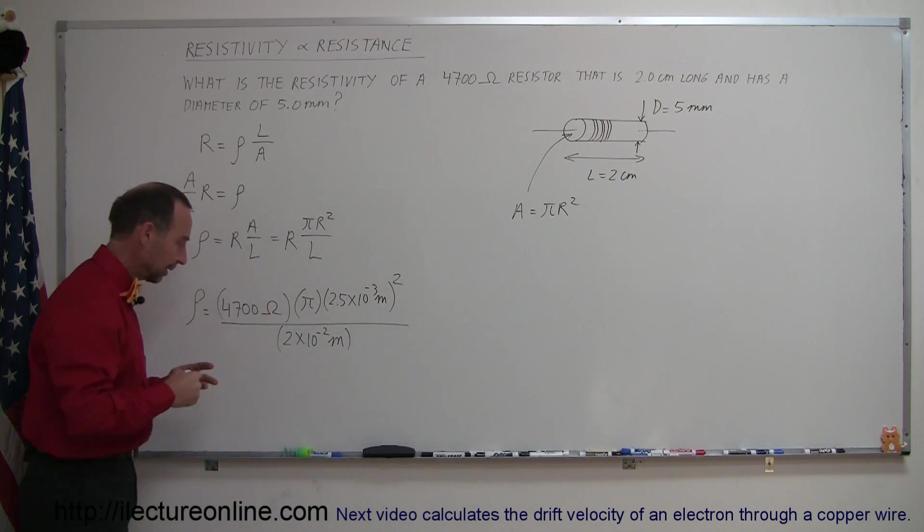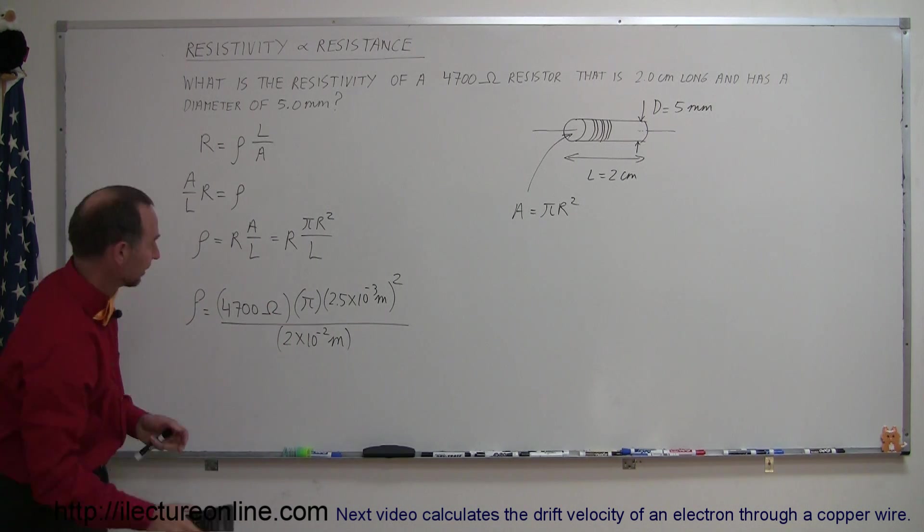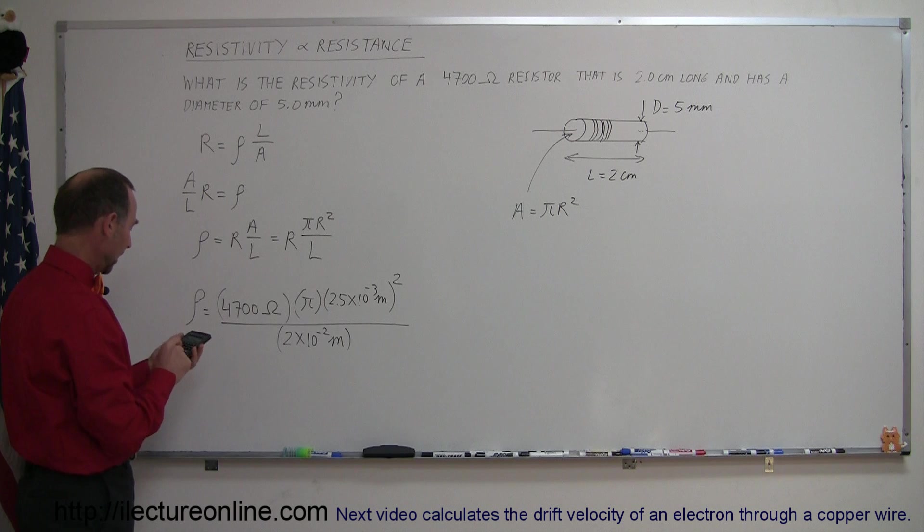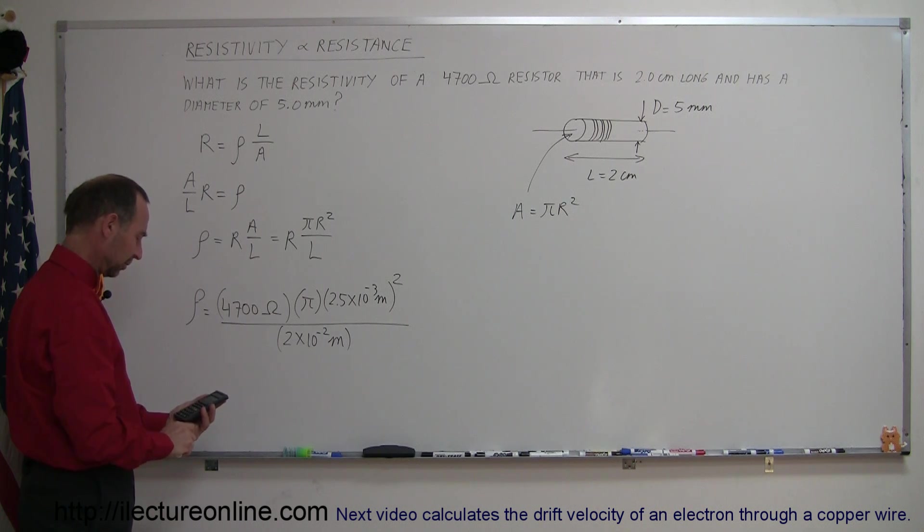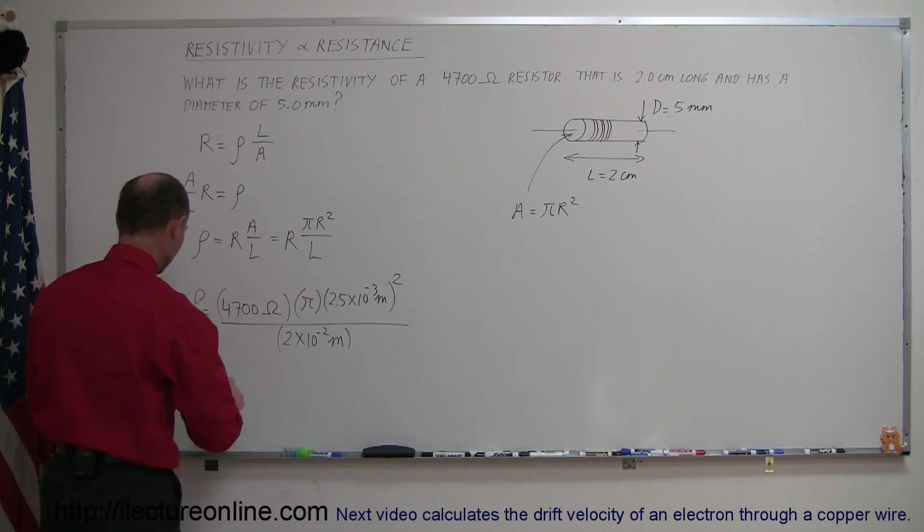Now let's use our calculator. Plugging in the values: 4,700 times π times 2.5 times 10 to the minus 3, and we have to square that amount. And now we divide that by 2 times 10 to the minus 2. There we go. The resistivity of this material is 4.6.